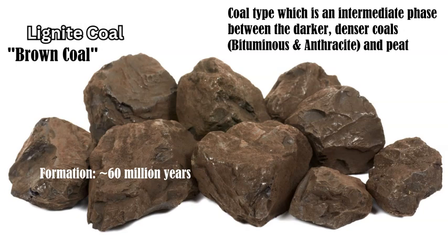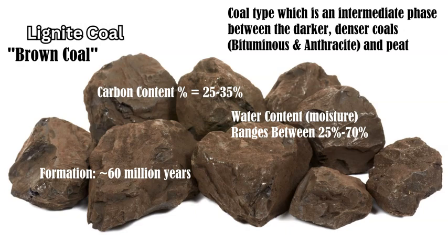From peat, the material moves into lignite, and then continues on with increased pressure, reduced water content, and heat to form into sub-bituminous. Lignite is that very important link between the peat and the darker, denser, higher energy coals. This is called brown coal. It has between 25 to 35 percent carbon content and a great deal more moisture and volatiles in its composition compared to the other denser coals, even sub-bituminous.